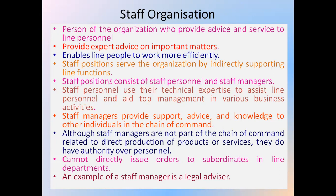Staff positions consist of staff personnel and staff managers. Staff personnel use their technical expertise to assist line personnel and aid top management in various business activities. Staff managers provide support, advice, and knowledge to other individuals in the chain of command. Although staff managers are not part of the chain of command related to direct production of goods or services, they do have authority over personnel but cannot directly issue orders to subordinates in line departments. An example of a staff manager is a legal advisor.